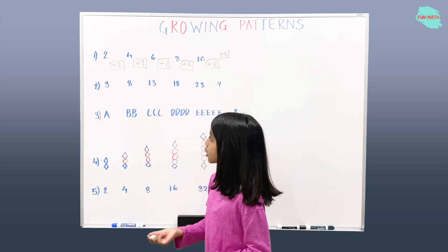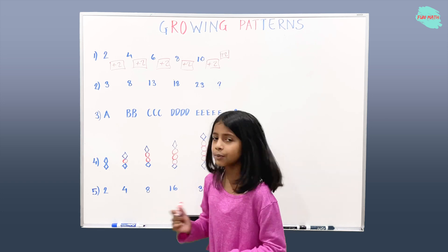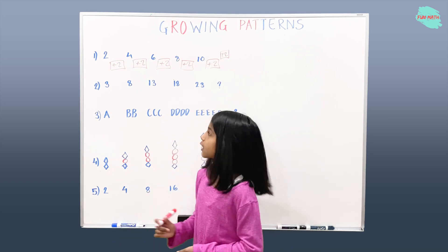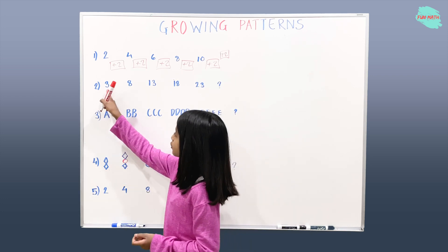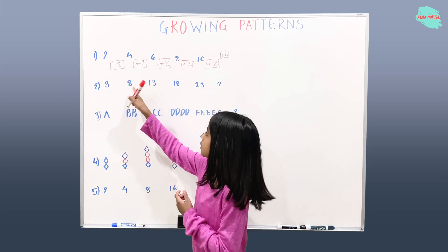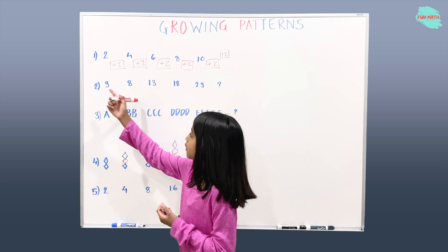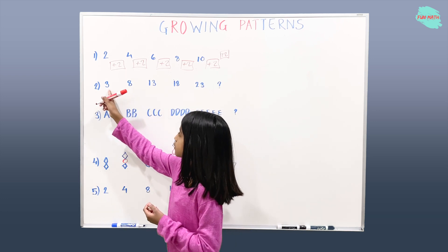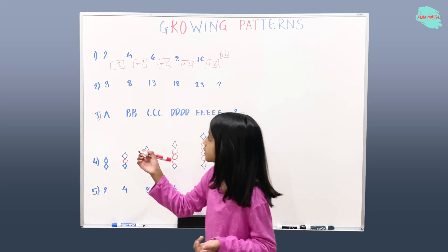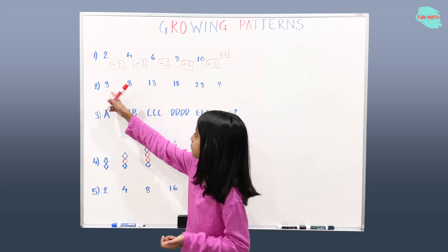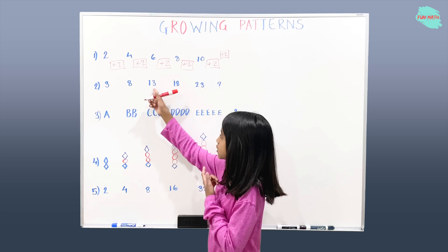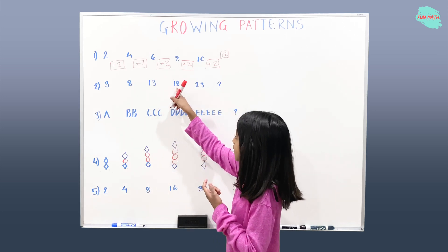Let's solve example two. Here we also have to find the term of the relationship. So three plus something equals eight. Three plus five equals eight. So let's see if that's correct. Three plus five equals eight. Eight plus five equals thirteen.